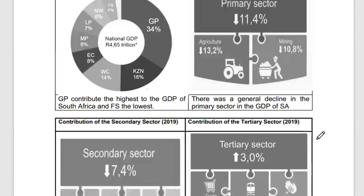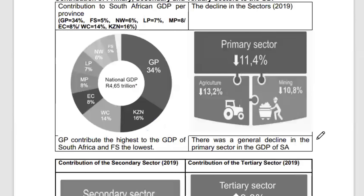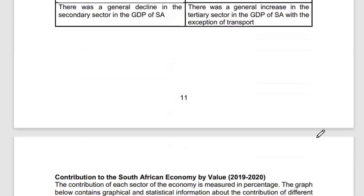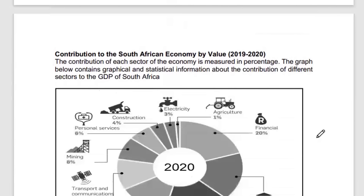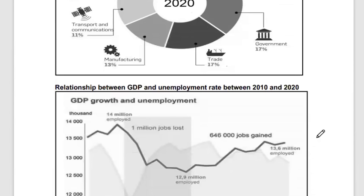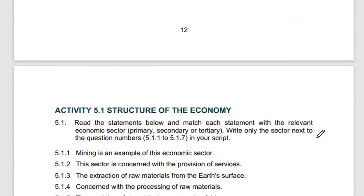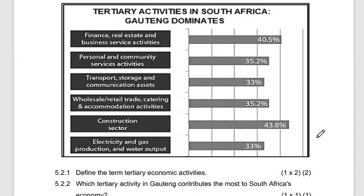After the sectors of the economy, we also need to interpret graphs. Questions often ask about the contribution of different sectors to the economy. You must be able to interpret pie charts, bar graphs, or line graphs and identify trends across the different sectors — including their contribution to the South African economy by value.